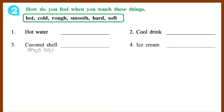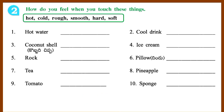Section 2: How do you feel when you touch these things? The feeling options are: Hot, Cold, Rough, Smooth, Hard, Soft. Answer 1: Hot Water — Hot.